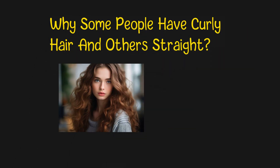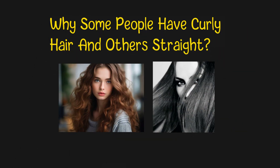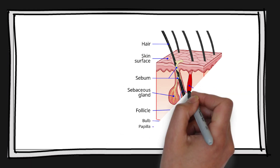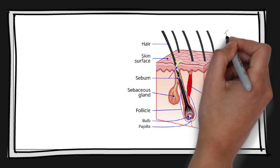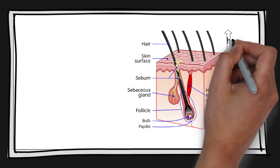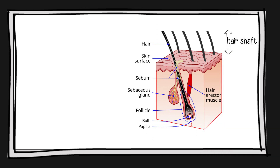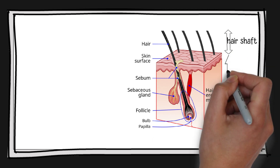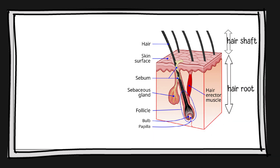Why do some people have curly hair and others straight? A single hair strand comprises two fundamental elements. The hair shaft is the portion of the hair that is visible above the skin surface, while the hair root is situated within the skin and extends into the deeper layers of the skin.